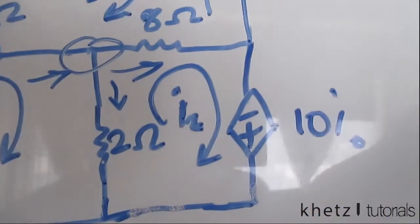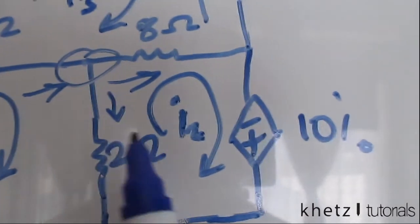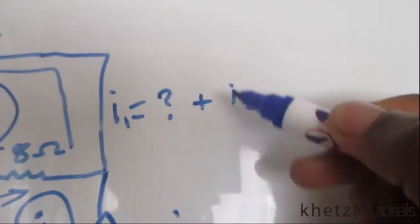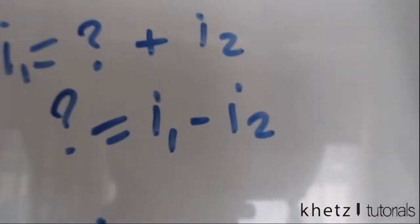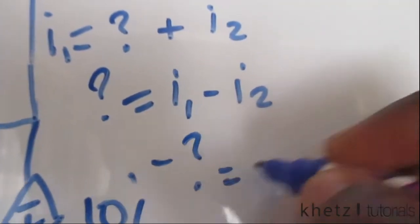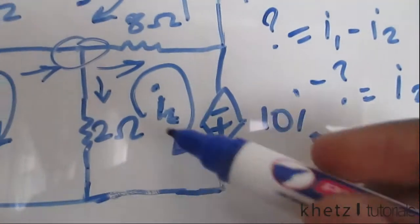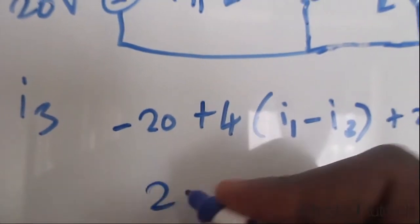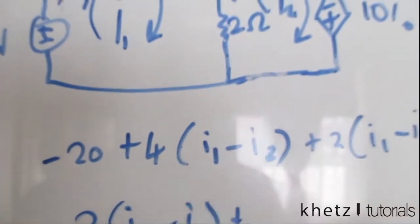Moving on to mesh two or equation two. In this case, I.2 is going in the opposite direction of the current which goes through the shared 2-ohm resistor. So it's going to be the negative of that. We said the shared current between meshes one and two is I.1 minus I.2. Since I.2 goes in the opposite direction, it becomes the negative of that, which is I.2 subtract I.1. So we're going to have 2 times (I.2 minus I.1).